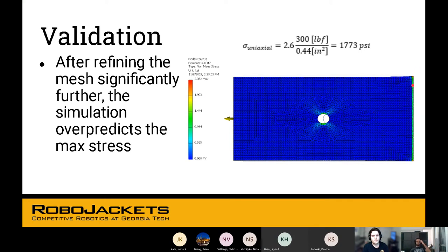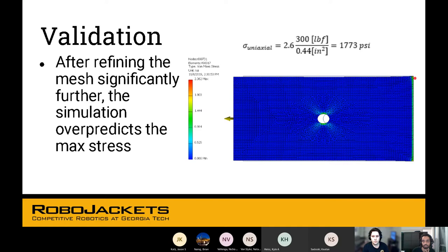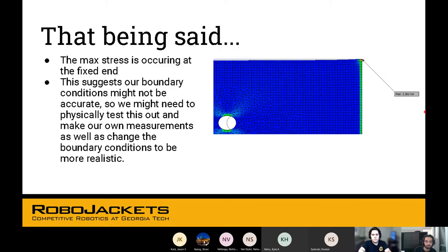You'll notice that this right edge has some green, apparently there's some stress happening here and there's a red dot over here. This is happening because of the boundary conditions that we've applied. Our area of interest is this hole, but there's something happening here as well. Max stress is occurring at the fixed end. Why do you think this is happening? Maybe there's an issue with the boundary conditions.